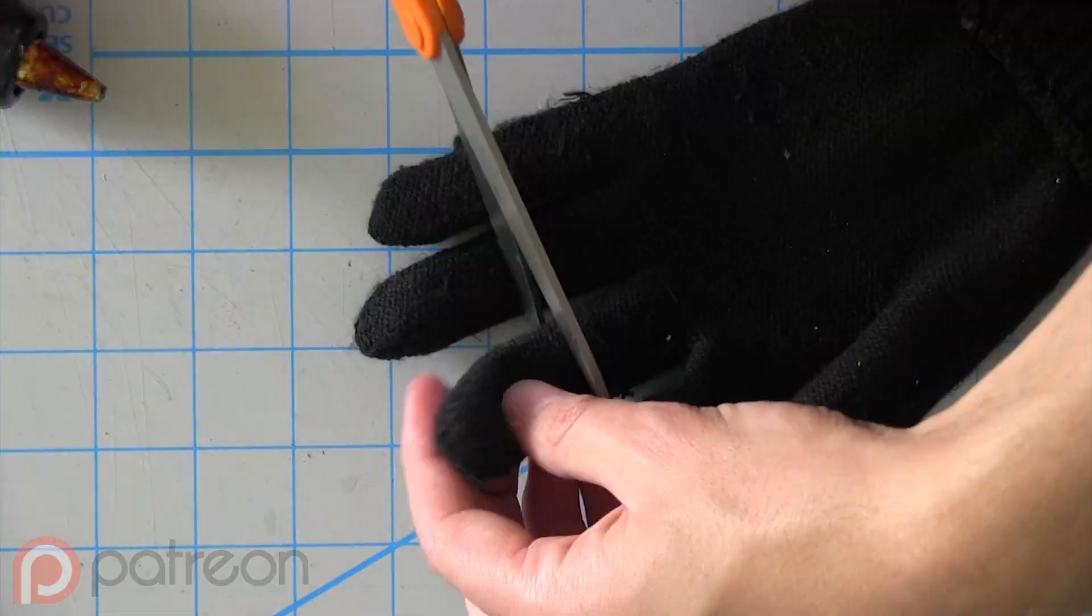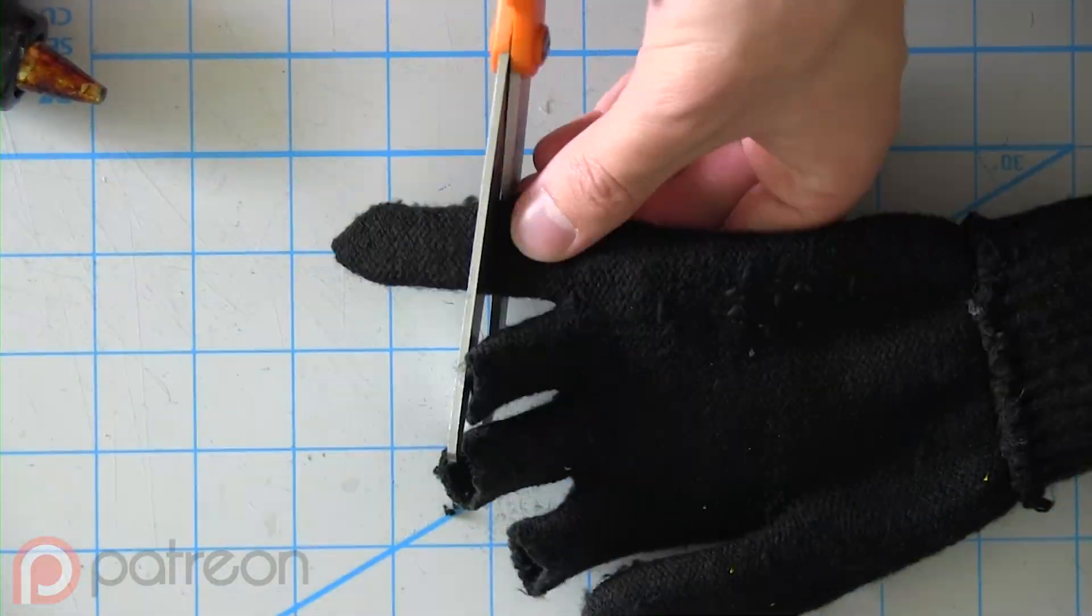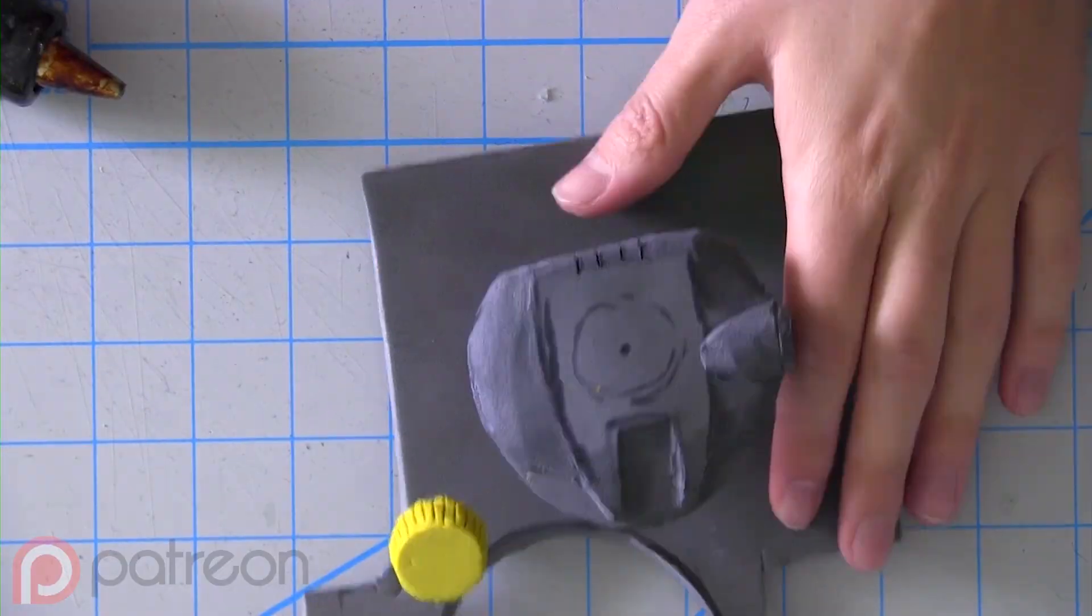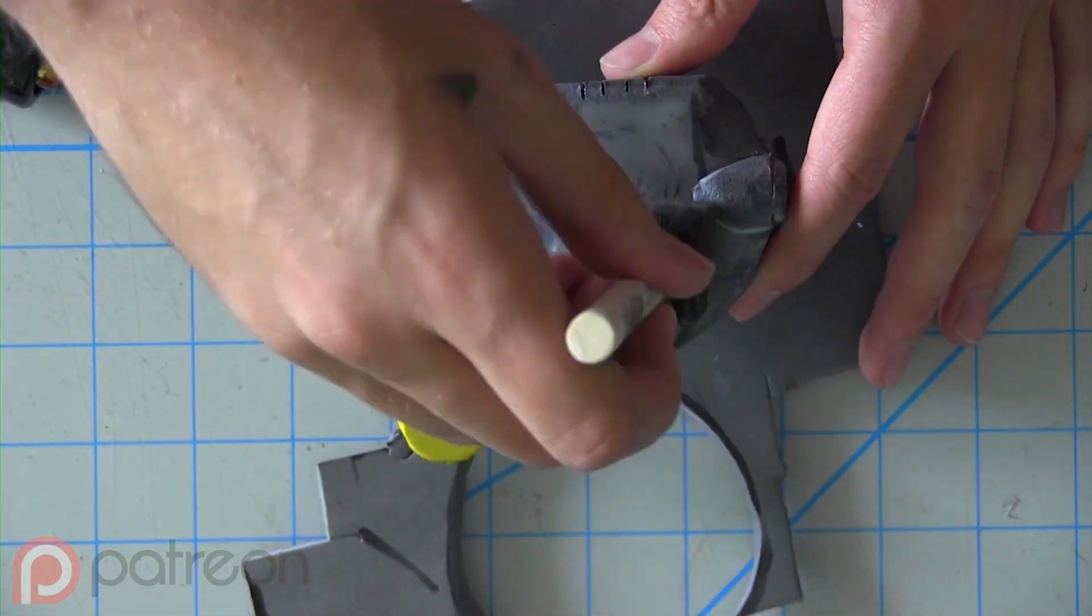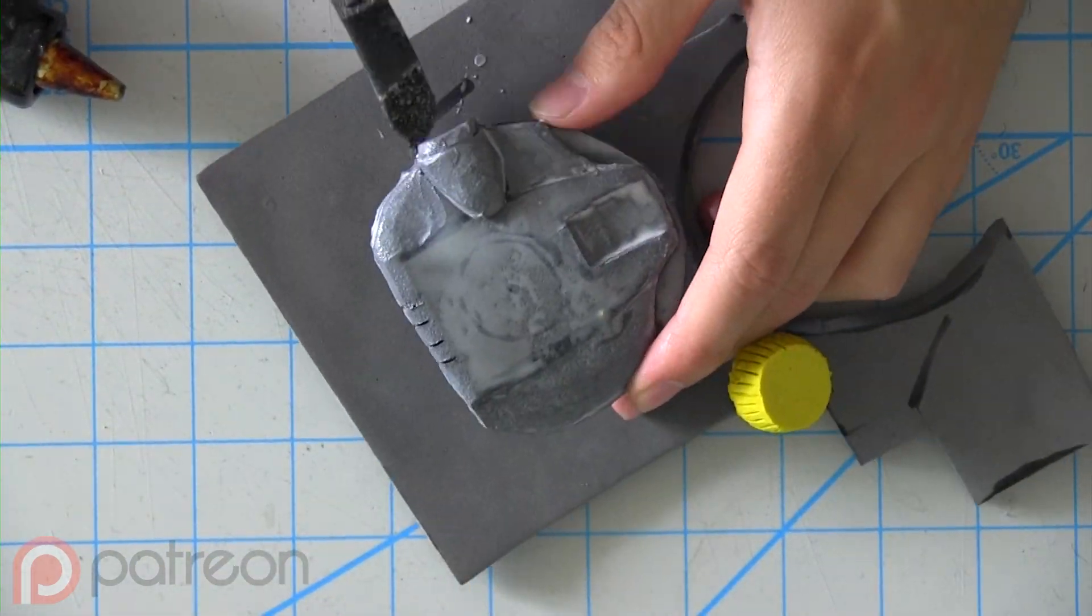While those parts are drying, I cut the fingers off of an old glove and made sure to fuse the ends with a match. Since you have to do five layers of white glue, I'd try not to rush this. Just let it dry out on its own.